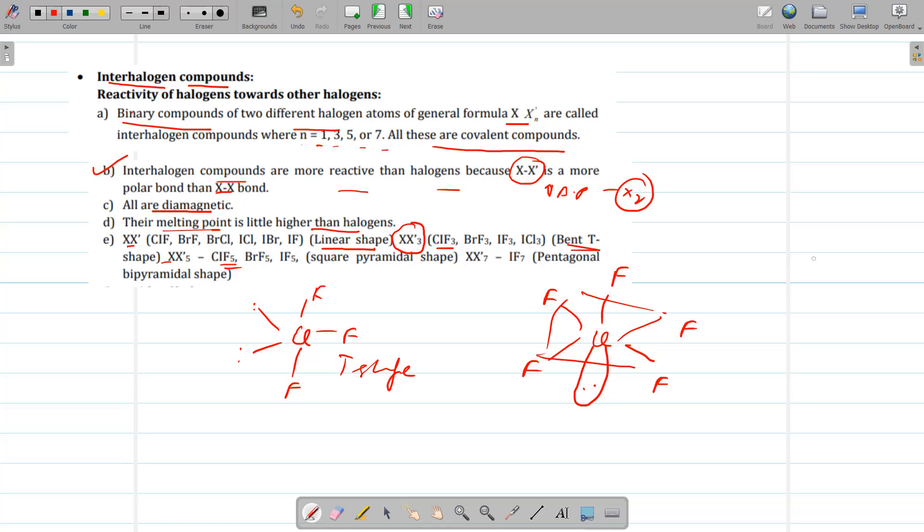Then IF7, it is pentagonal bipyramidal in which in center there is iodine and there are five bonds with fluorine and one will be above and one will be below. That is pentagonal bipyramidal shape.